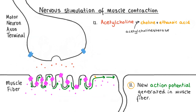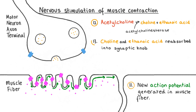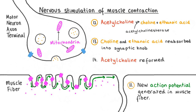Once a new action potential has been generated, acetylcholine is broken down by an enzyme called acetylcholinesterase in the synaptic cleft into choline and ethanoic acid. These products are then reabsorbed into the synaptic knob of the motor neuron, where they can be recycled back into acetylcholine using energy released by the motor neuron's many mitochondria. Acetylcholine is broken down so it does not continue to bind to receptors on the sarcolemma and overstimulate the muscle.